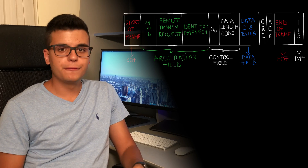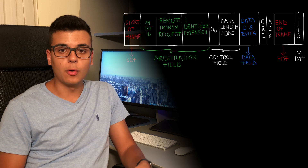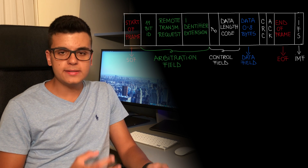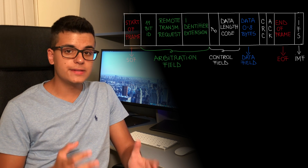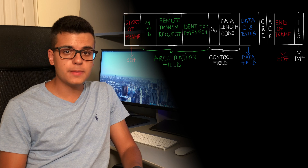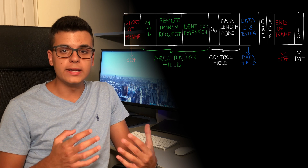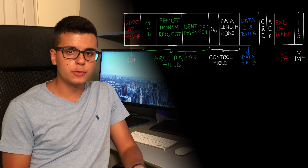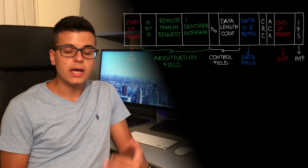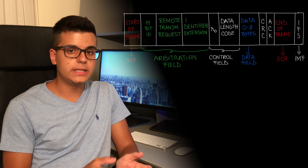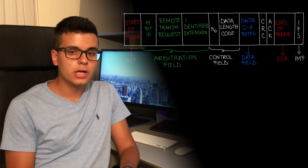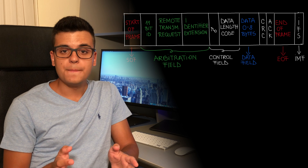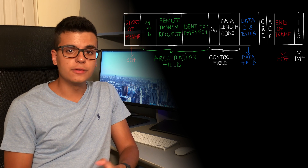Moving on to the control field: this contains an IDE or identifier extension bit, which tells us if this is a standard CAN bus message or an extended one. Then we have R0, which is reserved for future development, and DLC or data length code, which is half a byte and signals how many data bytes are going to follow.